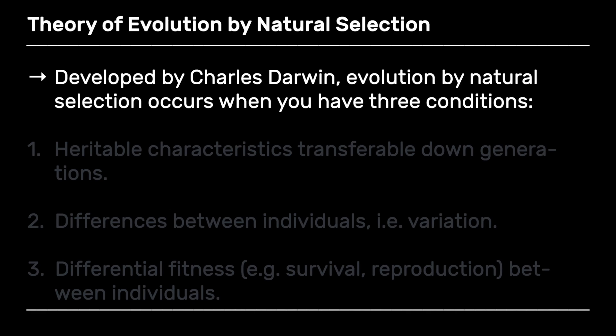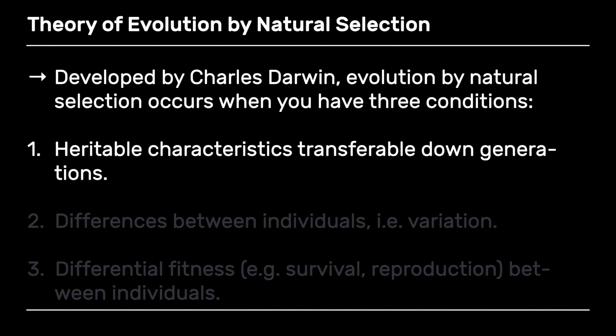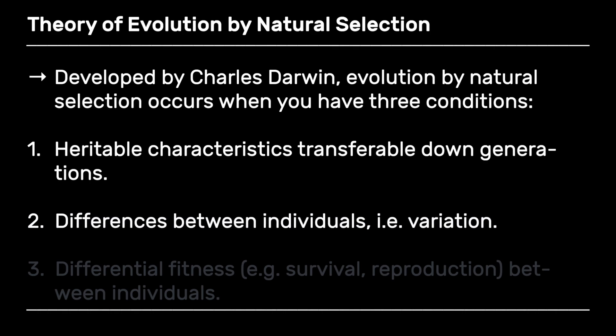This idea was first put forward by Charles Darwin in the 19th century and it is very, very simple. Natural selection occurs when you have three conditions. Firstly, heritable characters — something that can be transmitted because it has a genetic basis down the generations. Secondly, differences between individuals. You can't get evolution by natural selection if there's no variability. Variation is essential.